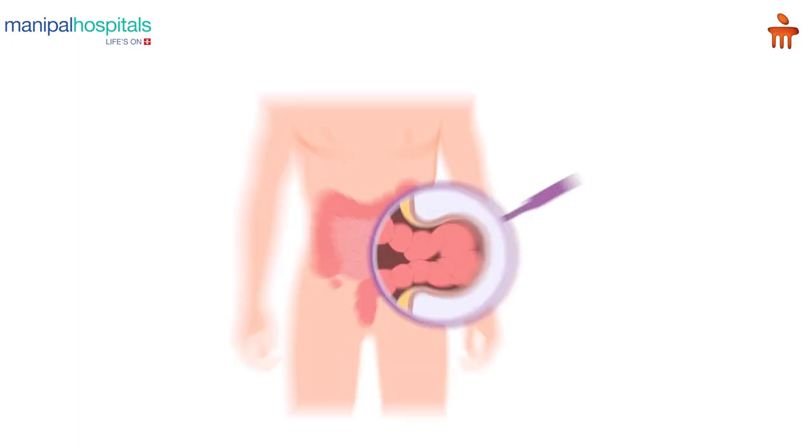These bulges can contain a part of the intestine. Whenever a swelling starts giving symptoms like pain or dragging sensation, treatment is required. Sometimes more intestine comes out causing a blockage, which can lead to fatal problems such as gangrene of the intestine — what we call strangulation — requiring immediate emergency surgery.